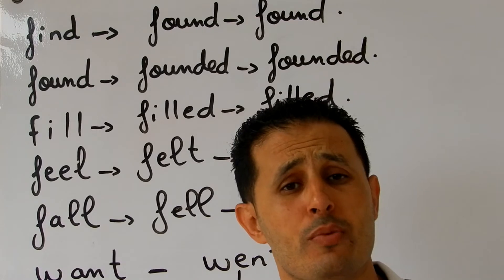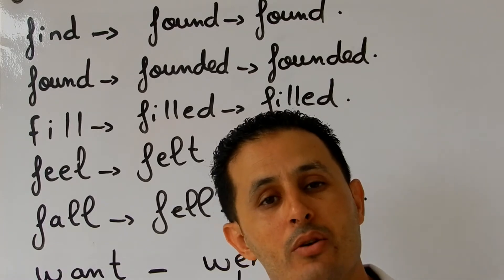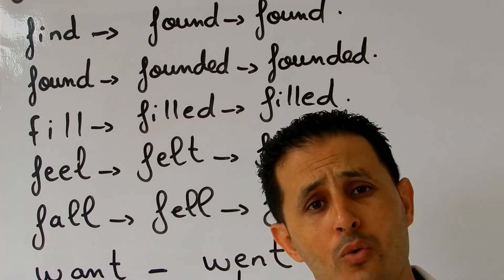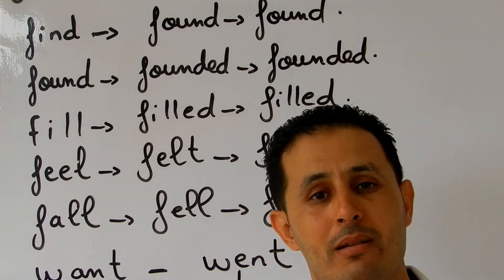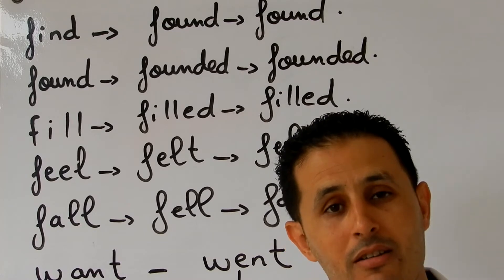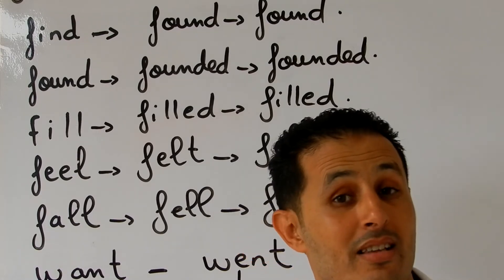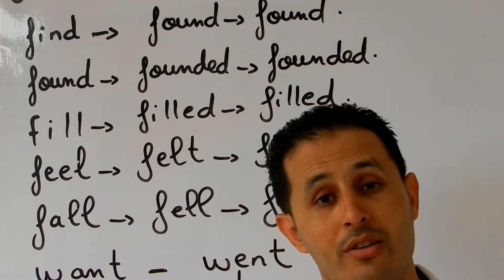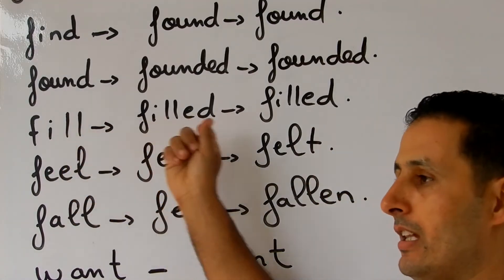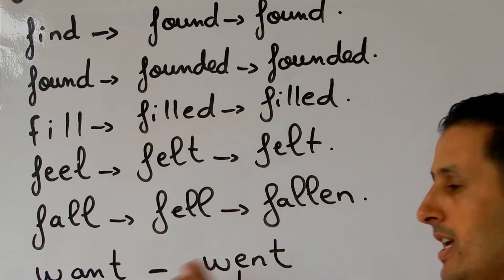'Fall' — when you are not being careful and you stumble, you can fall to the ground. Example: yesterday I fell while playing football; I fell on the ground and my friends helped me stand up. Also, when you put a pen on the table and it suddenly falls, you pick it up and put it back. The simple past of 'fall' is 'fell' and the past participle is 'fallen': fall, fell, fallen.